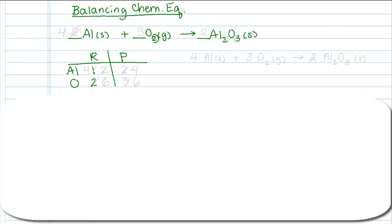On the product side, I have two aluminum atoms and three oxygen atoms. You can see from this table, it's not balanced.